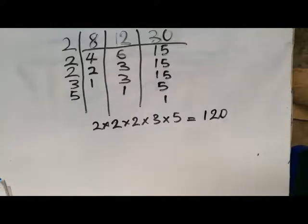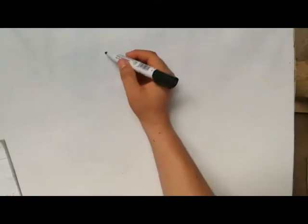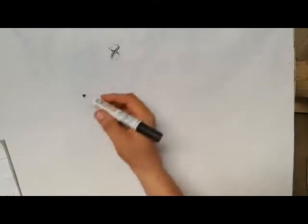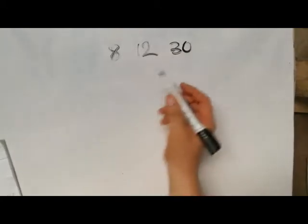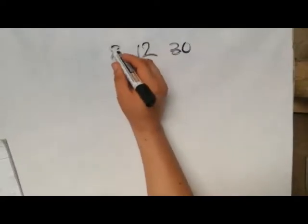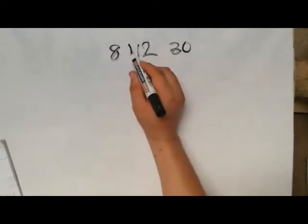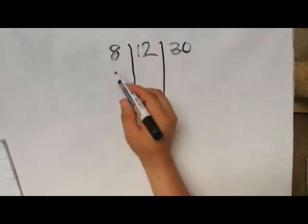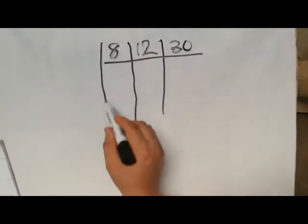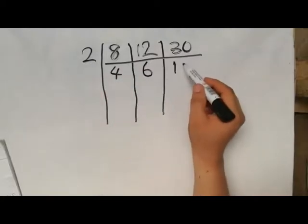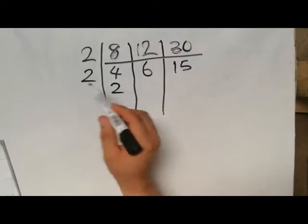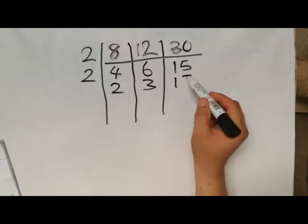This method is the division method. As I said earlier, most people like using this method. The fifth method is called the cake or ladder method — it is very similar to the division method. We have our 8, 12, and 30, placed on a table. We start with 2: 2 into 8 is 4; 2 into 12 is 6; 2 into 30 is 15. Next, 2 again: 2 into 4 is 2; 2 into 6 is 3; 2 into 15 stays 15 because it would leave a remainder.